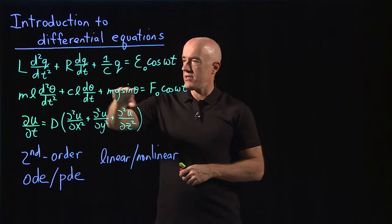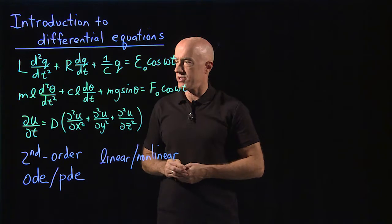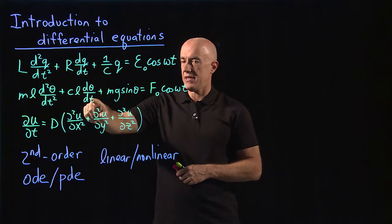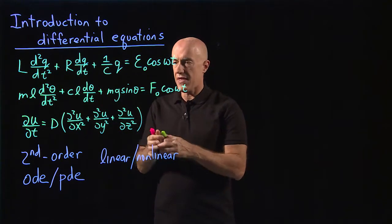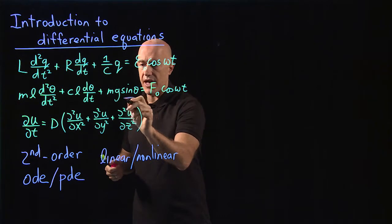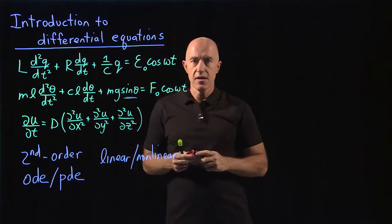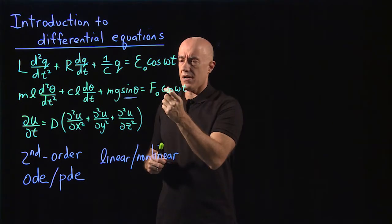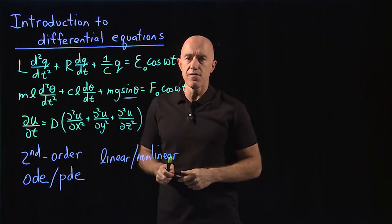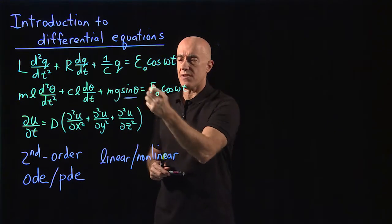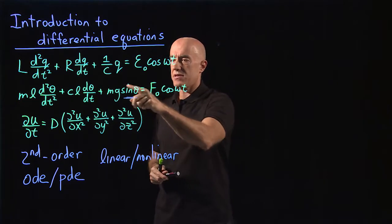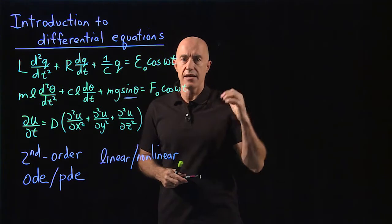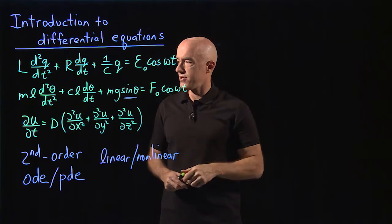However, the second equation is a nonlinear equation. There's a d squared theta dt squared and a d theta dt — those two terms are linear. But then there's this term here, which is sine theta. Sine theta has a Taylor series of theta minus theta cubed over 3 factorial, so it has terms of higher powers of theta in it, and this is called a nonlinear term. So this equation is considered nonlinear.